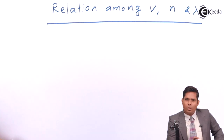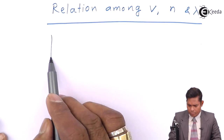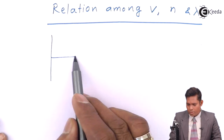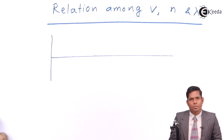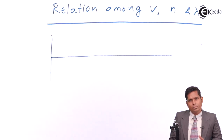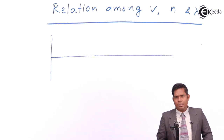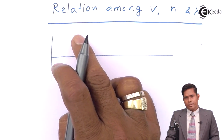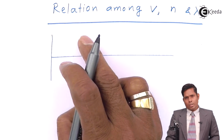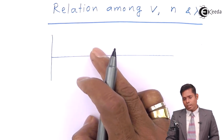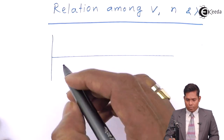Let us draw a wave in the form of crest and trough. The longitudinal wave can also be represented in the form of crest and trough. Though it is in the form of compression and rarefaction, the diagram can also be drawn, and the longitudinal wave can be understood with the help of the crest and trough representation.